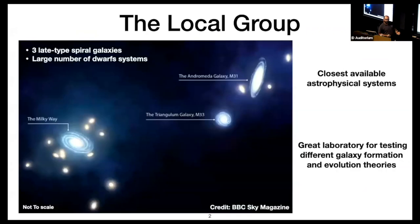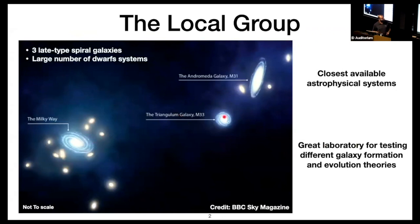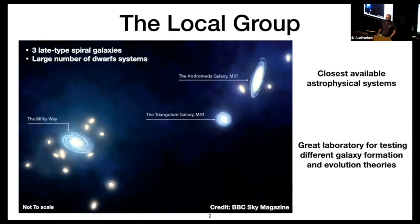Let me do a quick summary of the local group. We've heard a lot about Milky Way and Andromeda today. We have two big spiral galaxies — counting M33 as well — three spiral galaxies and about 100 dwarf galaxies. The local group is an important corner of the universe because it allows us to test galaxy formation and evolution theories, partly because it's close to us and has a lot of dwarfs, which are some of the most abundant structures in the universe.